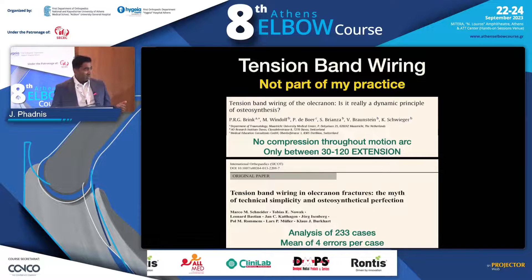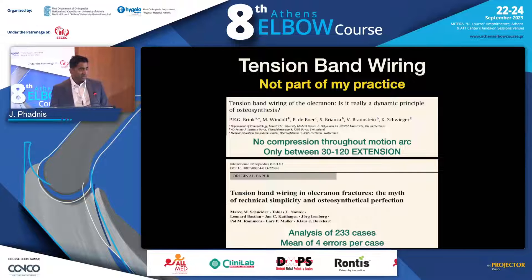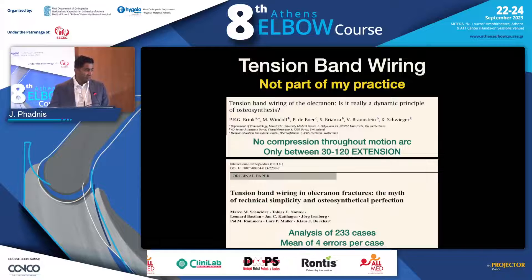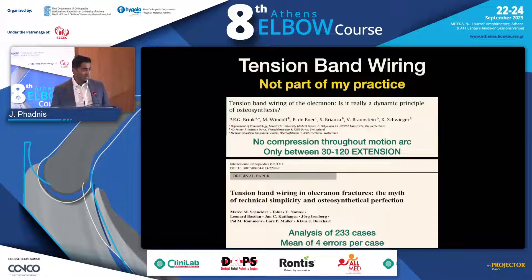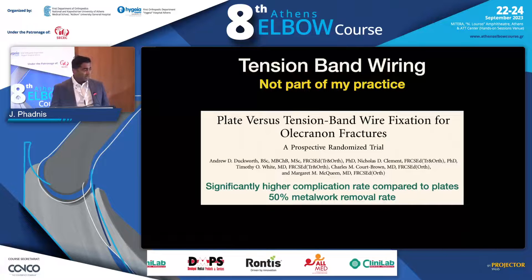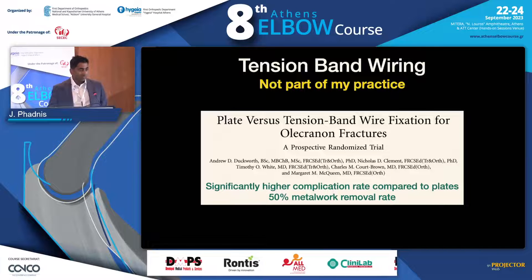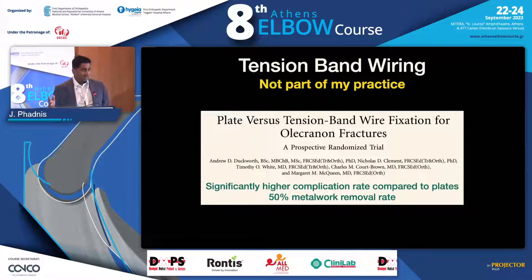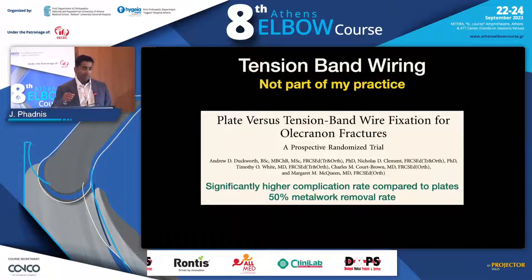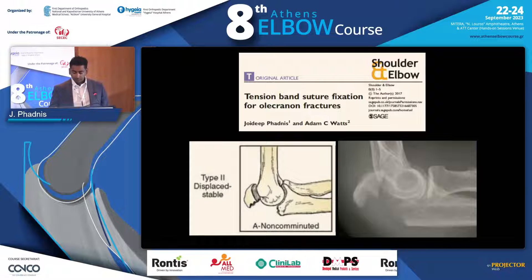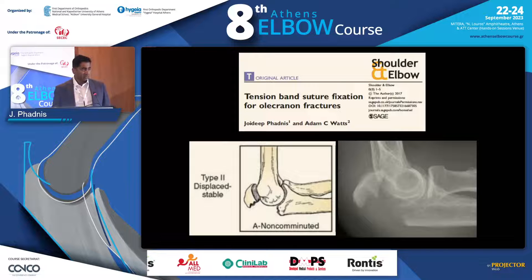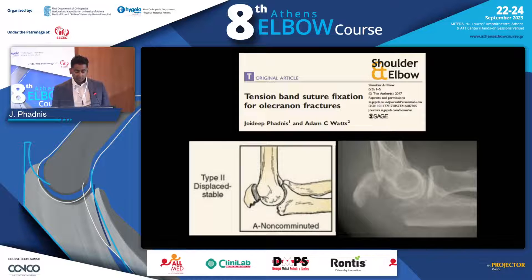Tension band wiring is not technically a completely straightforward procedure. A paper from a German group showed multiple errors over 200 cases within the surgery — so it's not necessarily easy and reproducible. Looking at the evidence from randomized controlled trials, the complication rate with tension band wiring is between 30 and 60 percent across many studies — not because of failure of the fixation method, but because of the need to remove metalwork. For those particular fractures, I've moved towards a tension suture repair that was really described by Adam Watts, which I helped describe.